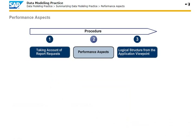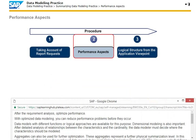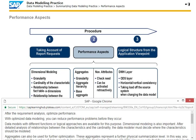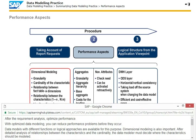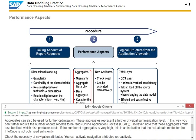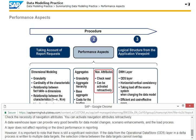After the requirement analysis, optimize performance. With optimized data modeling, you can reduce performance problems before they occur. Data models with different functions or logical approaches are available for this purpose. Dimensional modeling is also important. After detailed analysis of relationships between the characteristics and the cardinality, the data modeler must decide where the characteristics should be modeled. Aggregates can also be used for further optimization. These aggregates represent a further physical summarization level, and in this way you can further reduce the number of data records to be read, i.e., online application process or OLAP. However, note that these aggregates must also be filled, which also produces costs. If the number of aggregates is very high, this is an indication that the actual data model for the InfoCube is not optimized sufficiently. Check the necessity of navigation attributes. You can activate navigation attributes retroactively.